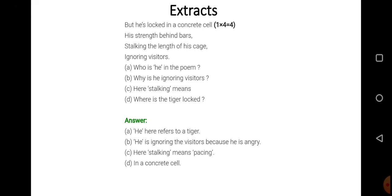Then we have some extracts. For example, there may be many but for your help I have given you a few. Like, for example, let's read this. But he is locked in a concrete cell, his strength behind bars, stalking the length of his cage, ignoring visitors. Who is he in the poem? We know it. He here refers to a tiger.